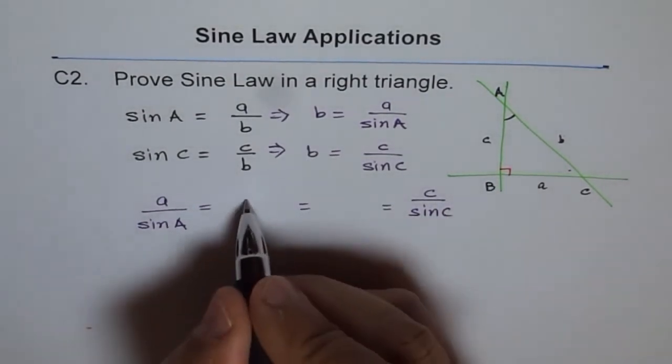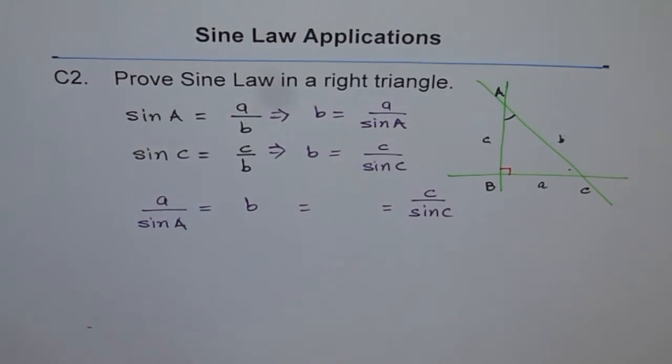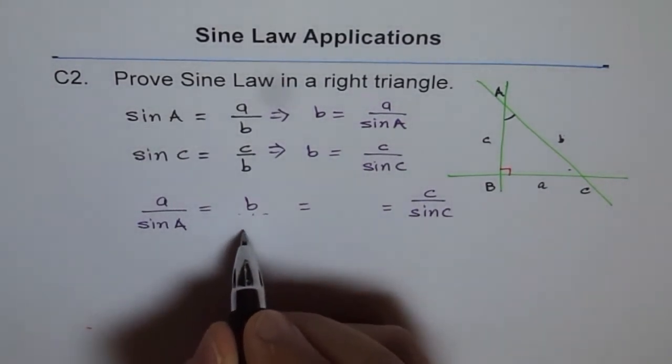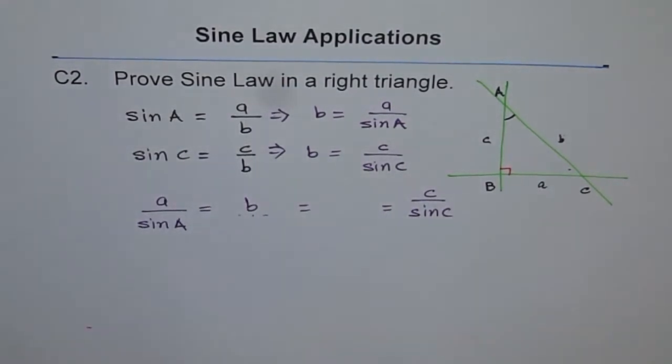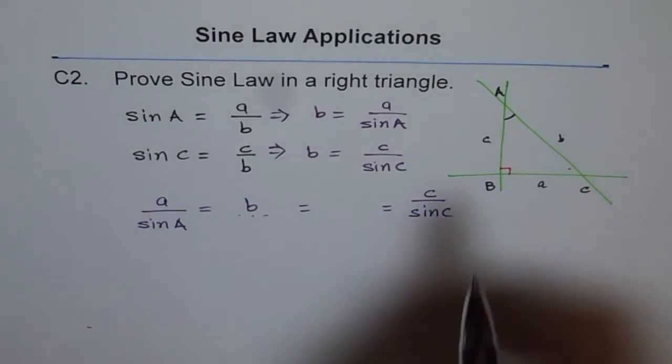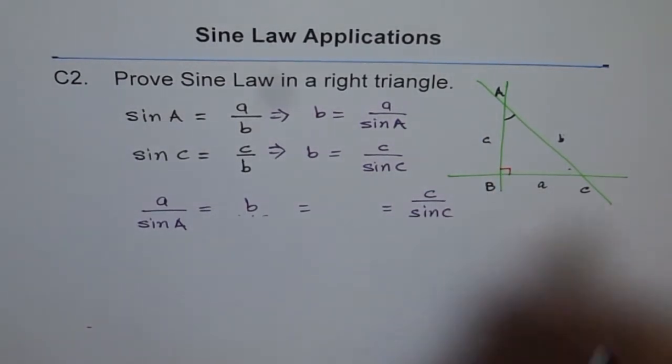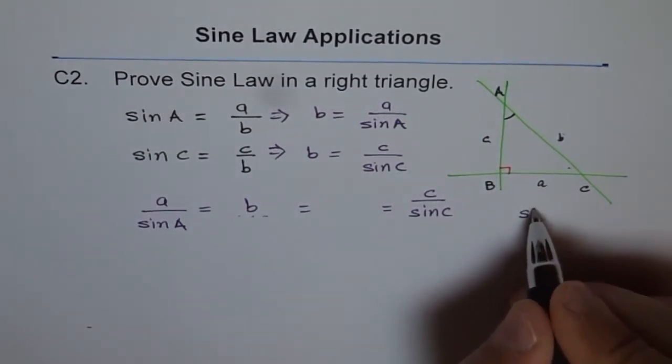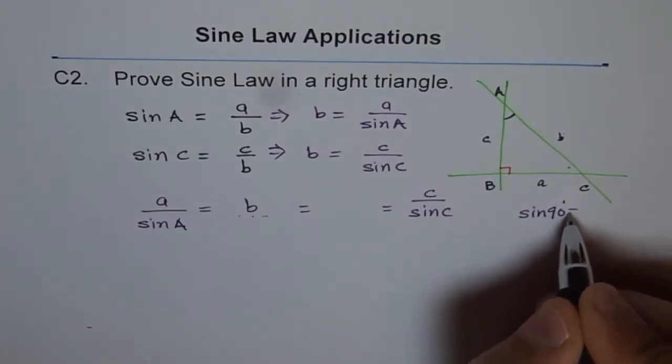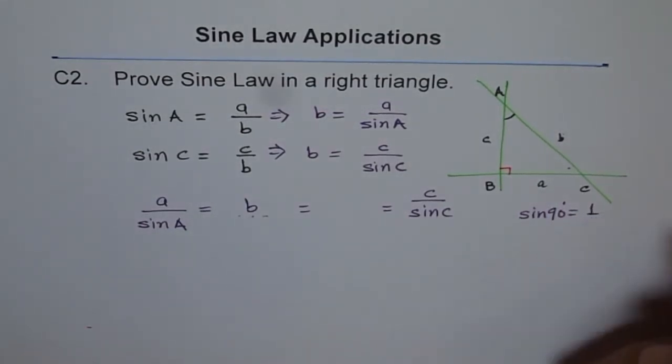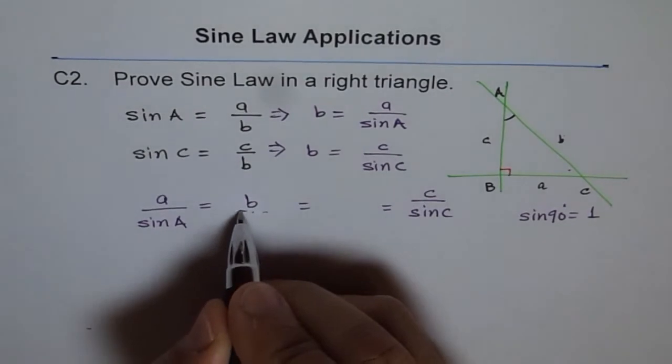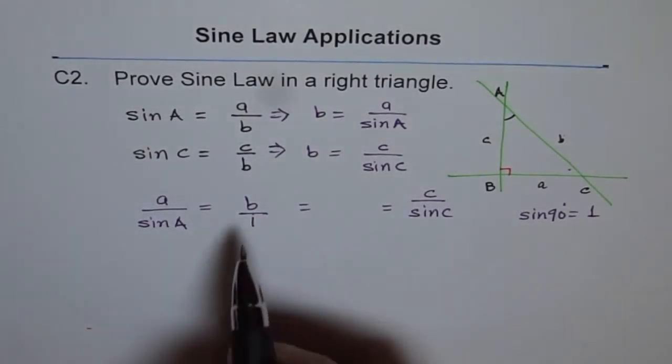So how about that denominator, sin B? Well, sin B is 90 degrees, and do you know what sine of 90 degrees equals? Sine of 90 degrees is 1.